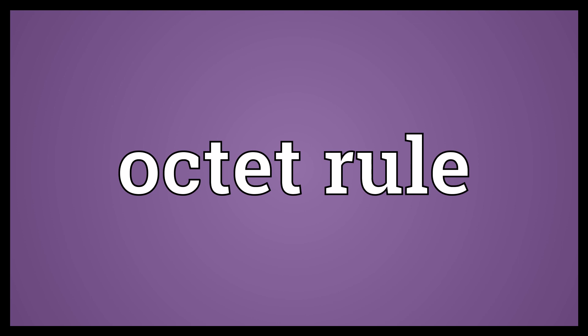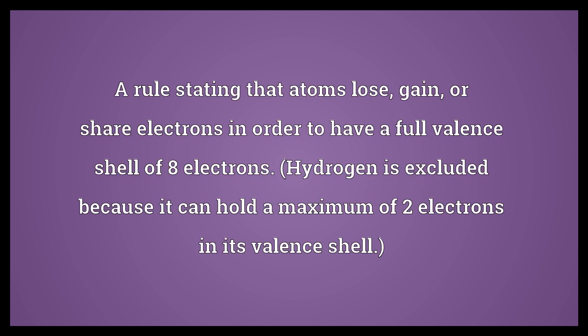Octet Rule: A rule stating that atoms lose, gain, or share electrons in order to have a full valence shell of 8 electrons. Hydrogen is excluded because it can hold a maximum of 2 electrons in its valence shell.